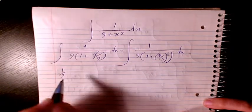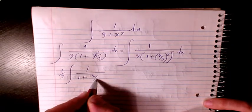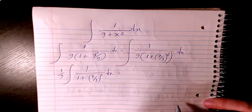So I put 1 over 9 outside and then I have 1 over 1 plus x divided by 3 squared dx.